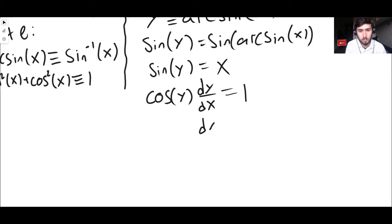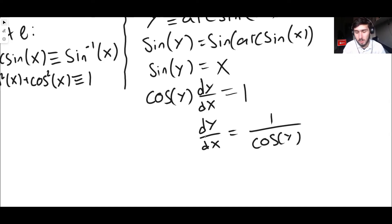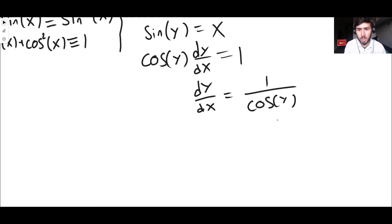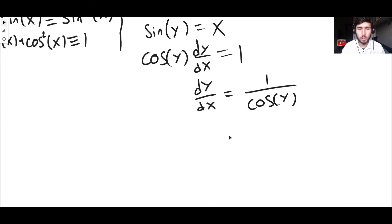From cos y · dy/dx = 1, we can make dy/dx the subject by dividing both sides by cos y, giving dy/dx = 1/cos y. You might be tempted to write this as sec y — and yes, 1/cos y is sec y — but don't do it, because I'll show you something now. You might also say we're finished, but it's not ideal because we want the right hand side in terms of x, not y.